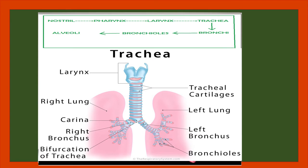During respiration, air passes through the nostril and the nasal passage. It leads to the pharynx and then to the windpipe through the glottis. The anterior part of the windpipe is enlarged to form the larynx, which is supported by cartilaginous plates. Inside the larynx lies the vocal cord. When air gets in, it vibrates and as a result sound is produced.